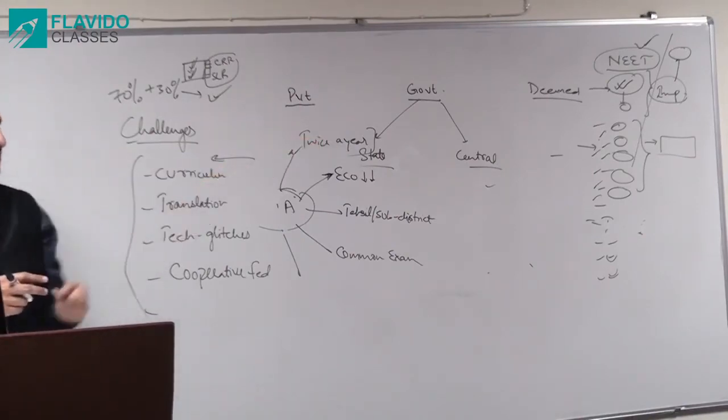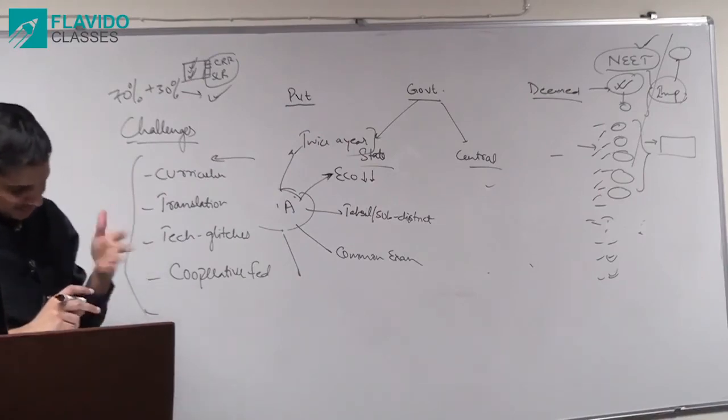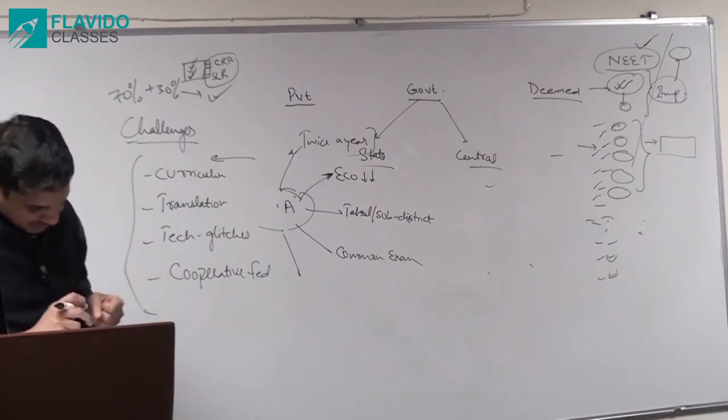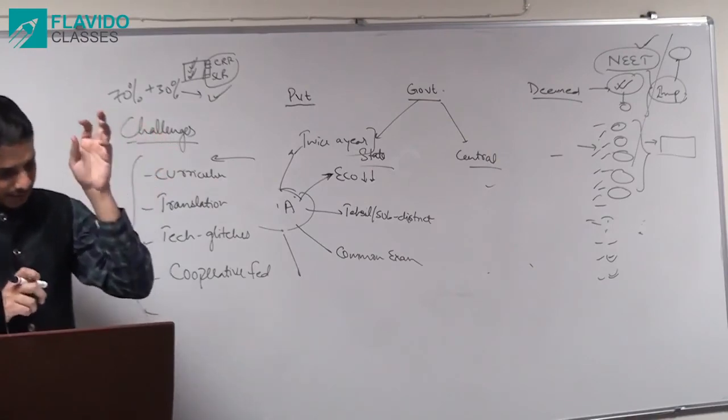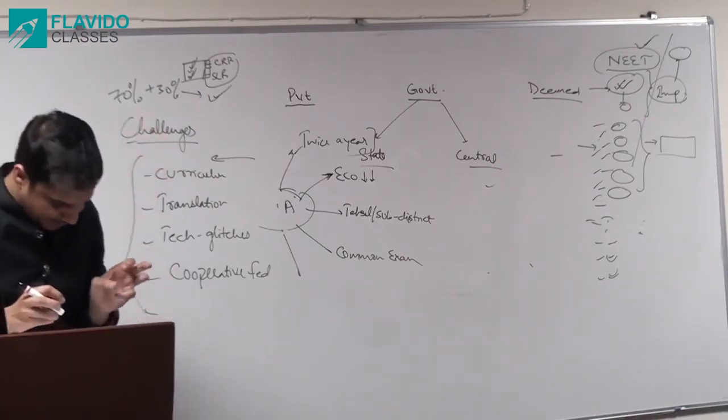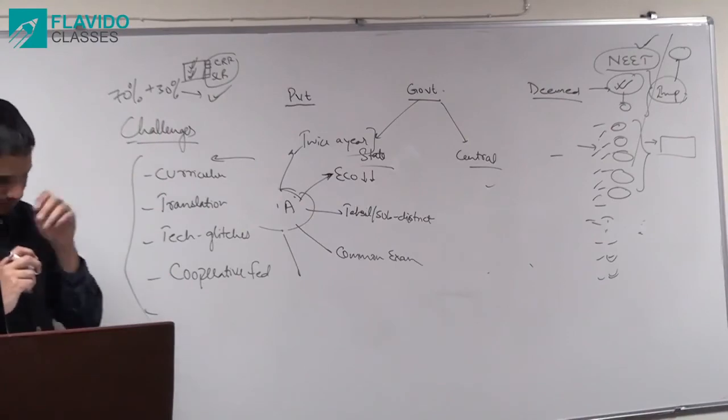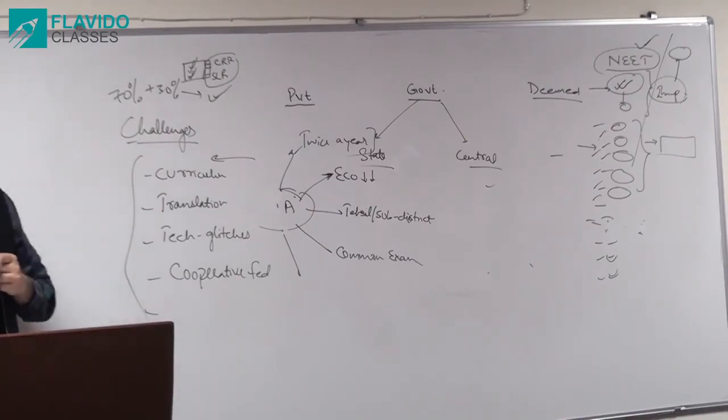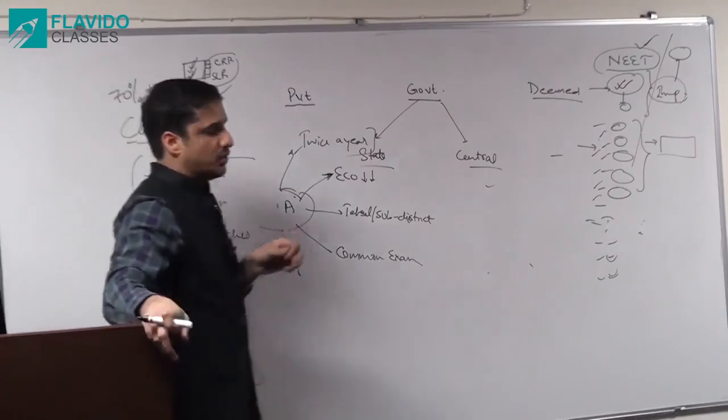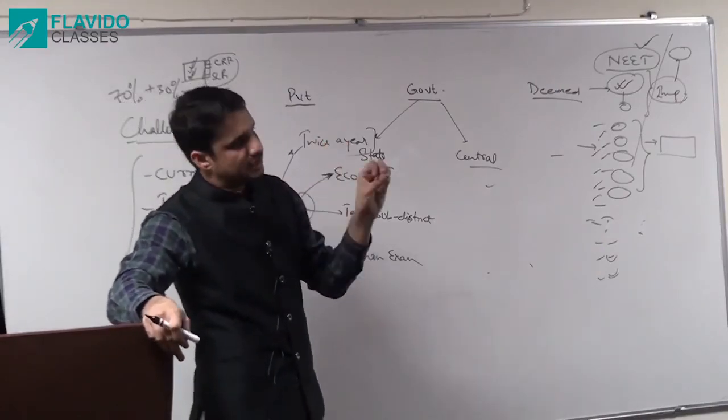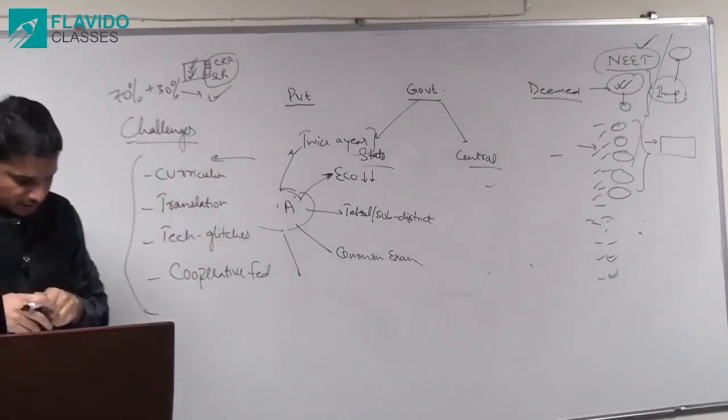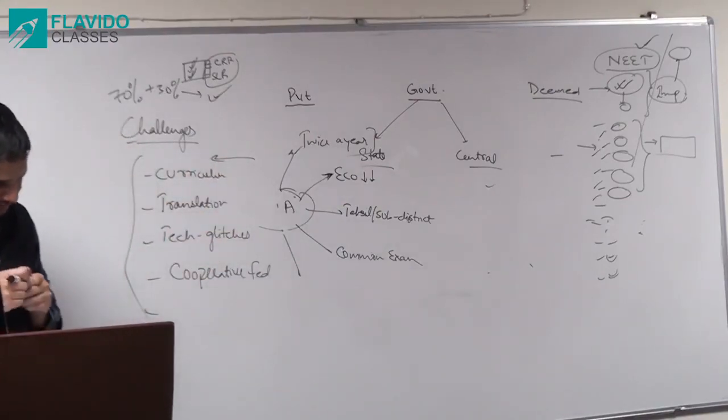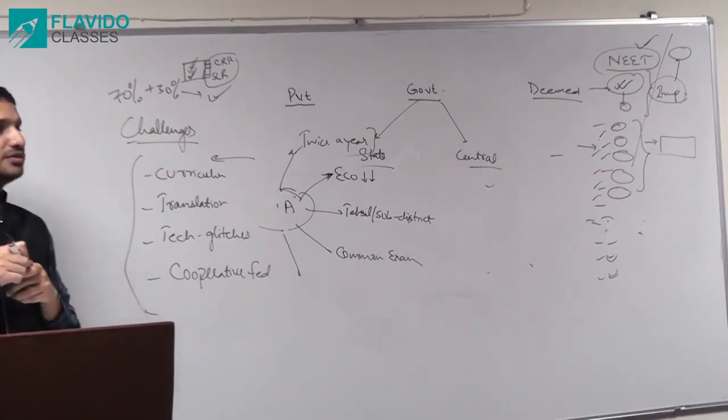And then we have UGC NET. Net kis liye hota hai, yeh aapko pata hoga. This you have cleared, so you know. Assistant Professors and all ke liye. So this will be in the online mode at least twice a year. Then the constitution of NTA, chairman will be an eminent educationist appointed by the Ministry of Human Resources. Isko yaad rakna. Finance of NTA. So the government is going to give you only one time grant of 25 crore. That's it. Uske baad self sustain karna hai. Only one time grant of 25 crores. Then it will be financially self sustainable body. And it is subject to the audit of CAG.